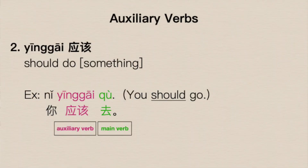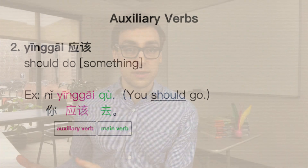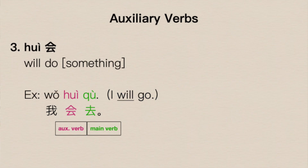Next we have 'should' or 'ought to' — 应该 (yīnggāi). In response to someone who says they might go, you might say 'you should go': 你应该去. 应该 is our auxiliary verb meaning 'should,' and 去 remains the main verb of the sentence.